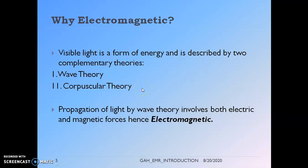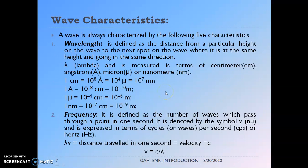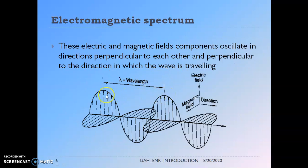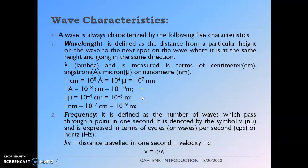Both theories are applicable to our entire discussion of electromagnetic basics. Coming to the definitions of wavelength, frequency, velocity, wave number, and amplitude — these arise from the wave theory. A wave is characterized by five important characteristics. Wavelength is defined as the distance from a particular height of a wave to the next point at the same height going in the same direction. It is represented as lambda (λ) and measured in centimeters, Ångströms, microns, or nanometers. In short, it is the distance between two successive troughs or crests.